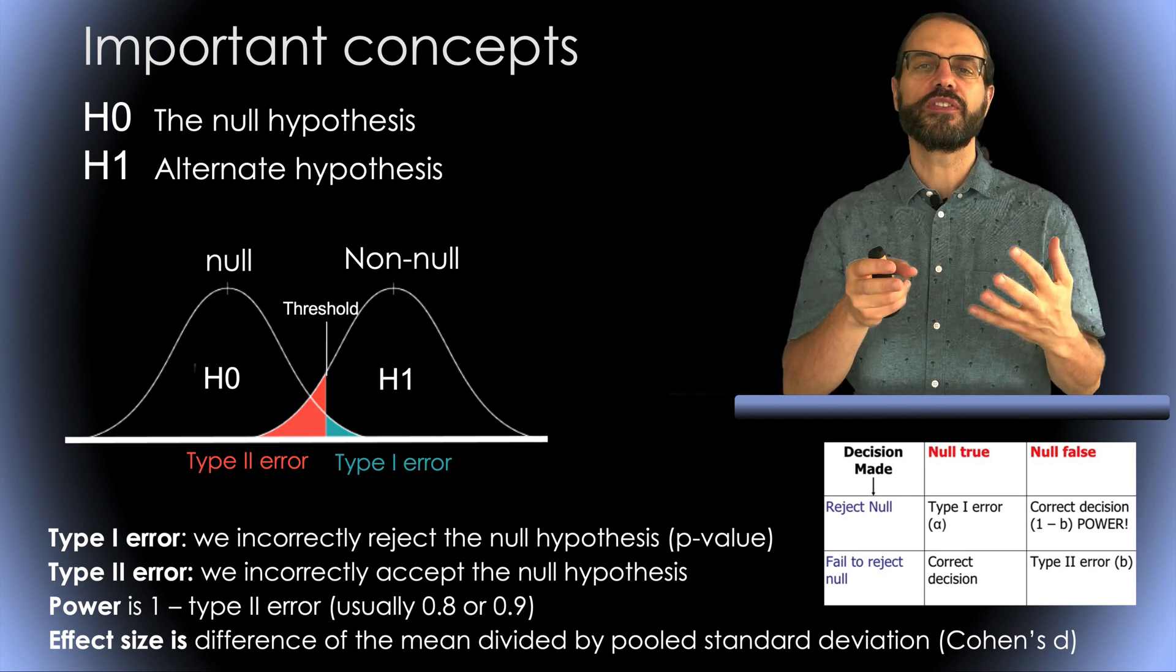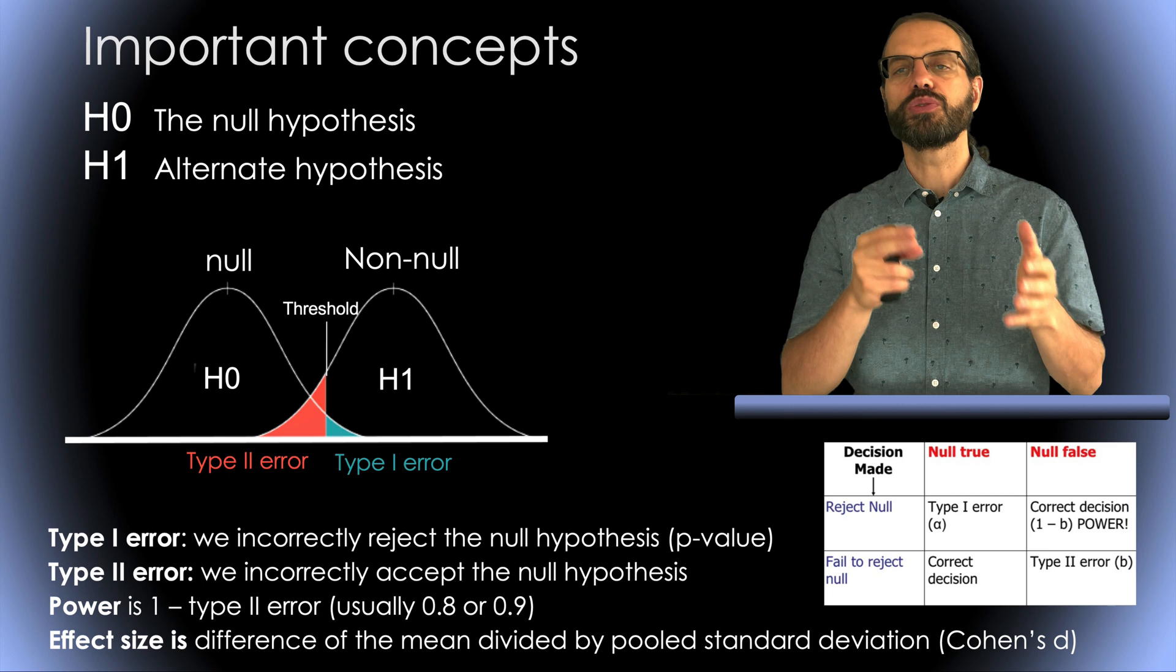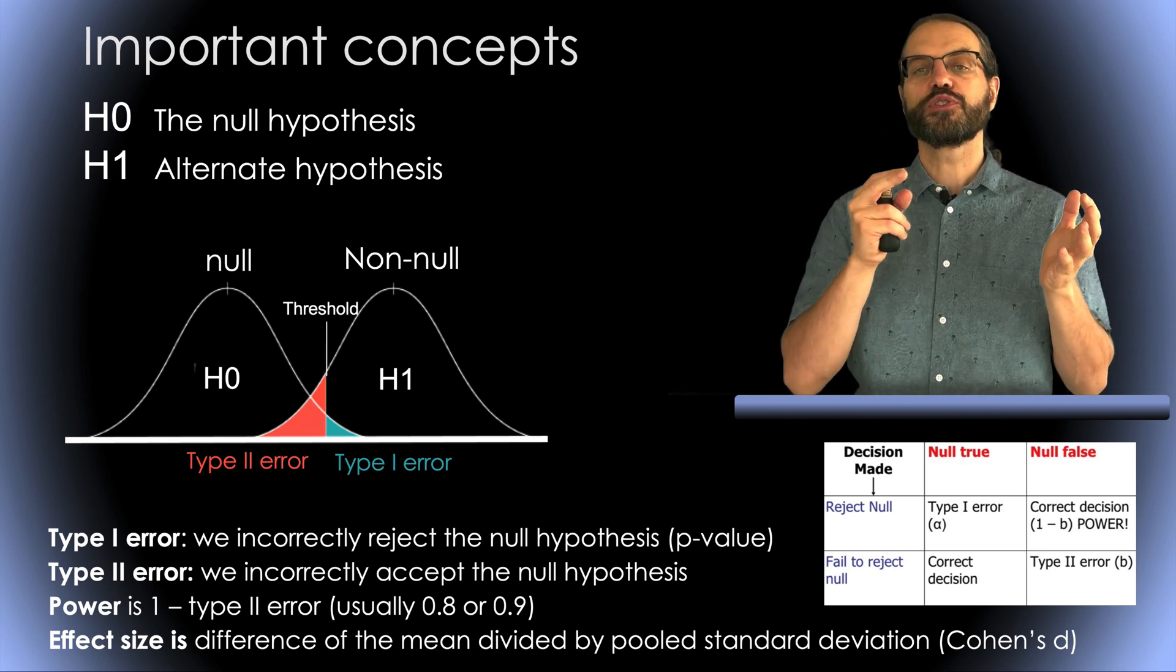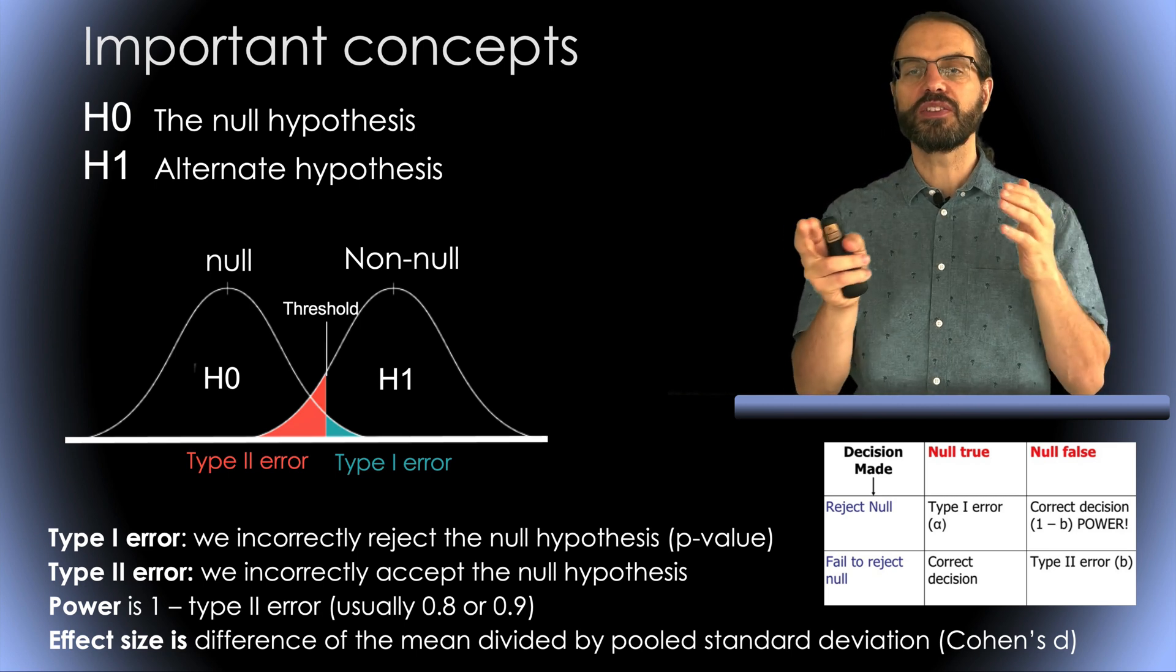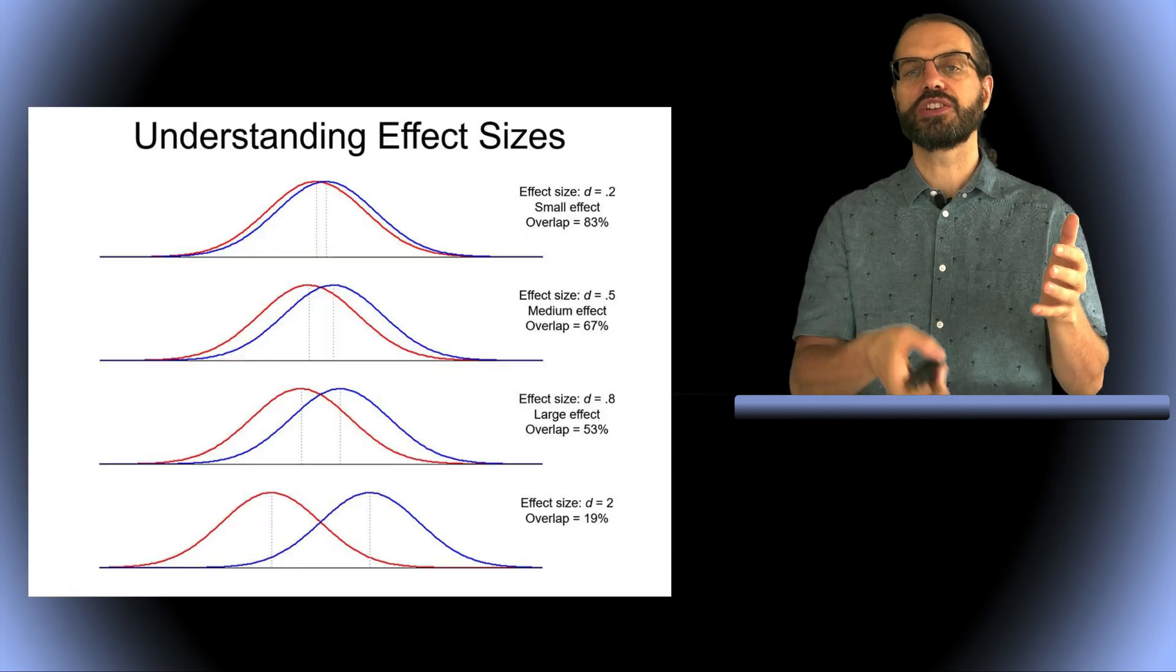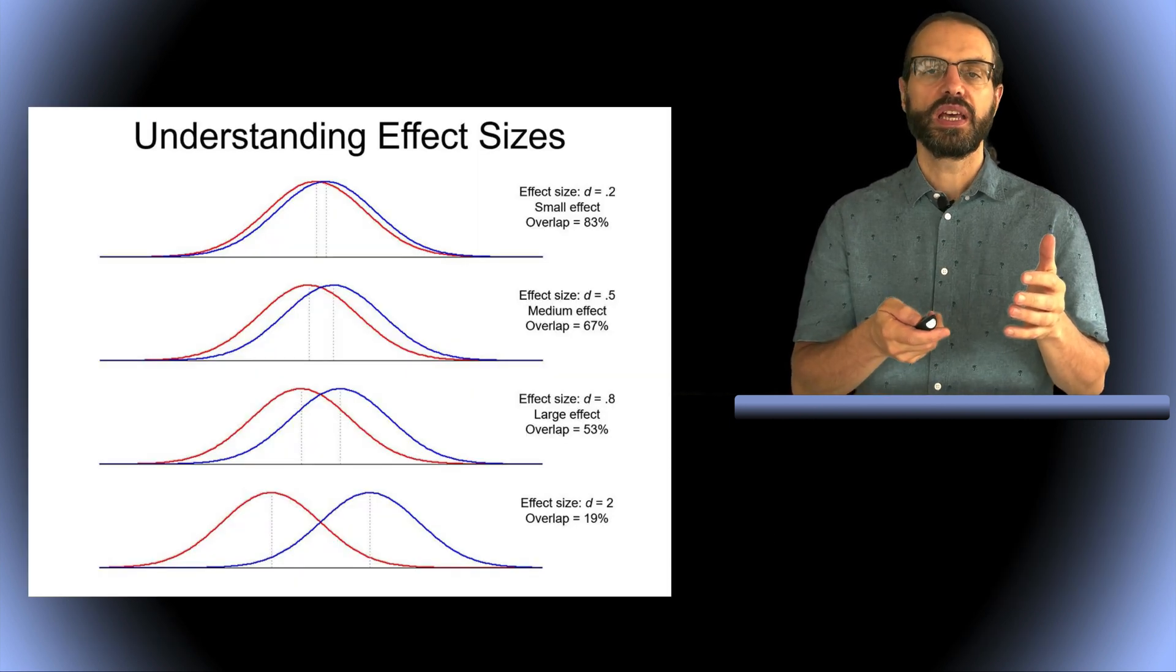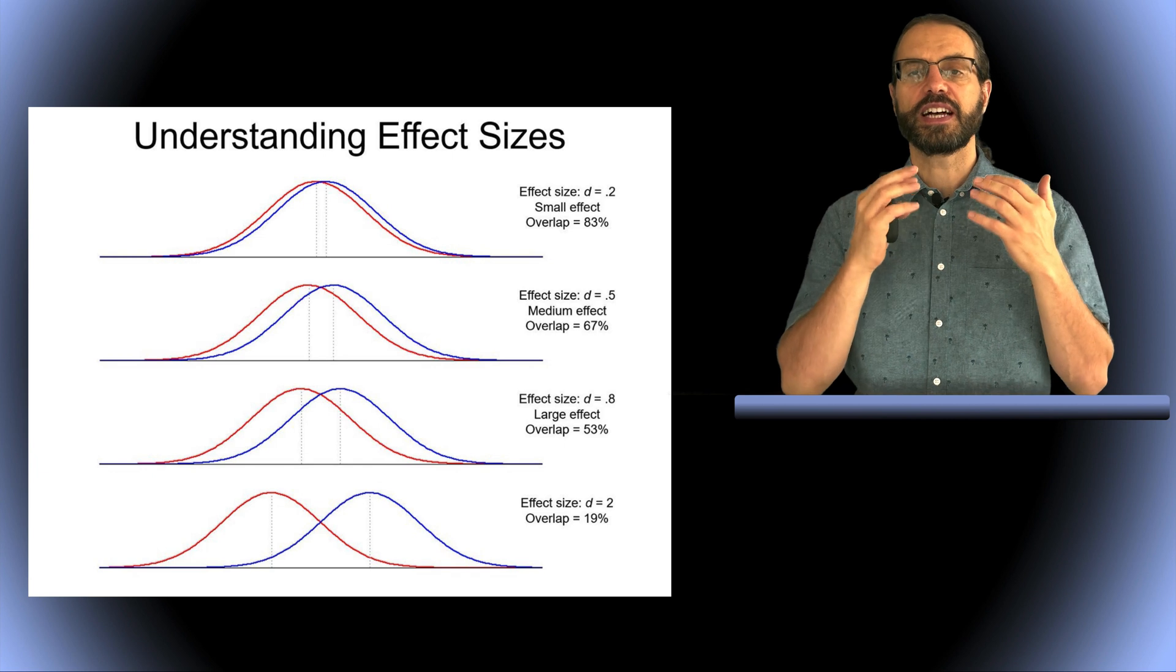Also, you must report the effect size, which is an indication of how different the EEG between A and B is. So in case of two groups, it is simply the difference of the means of A and B divided by the pooled standard deviation.